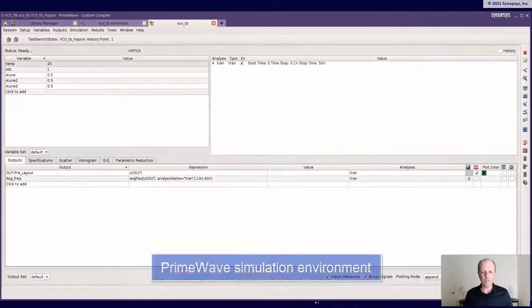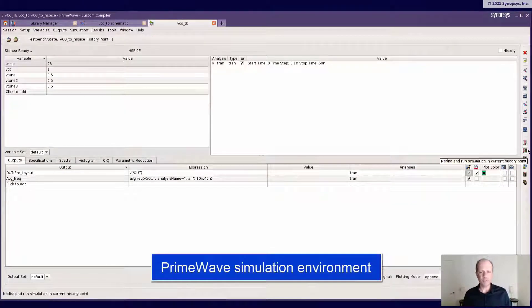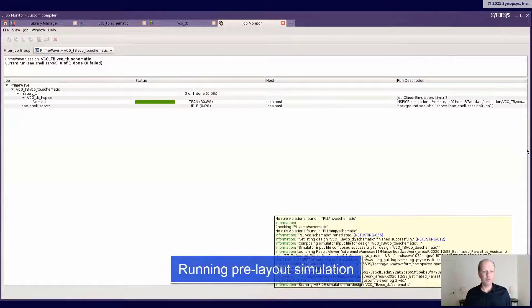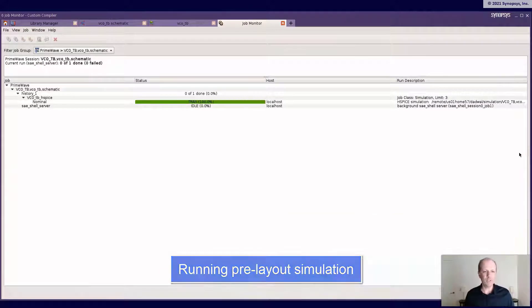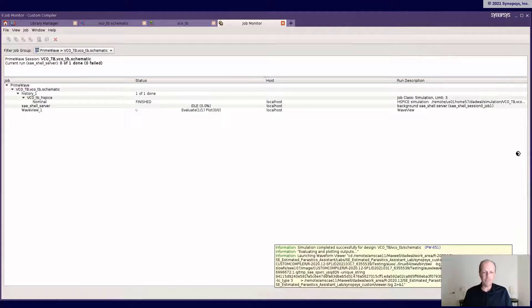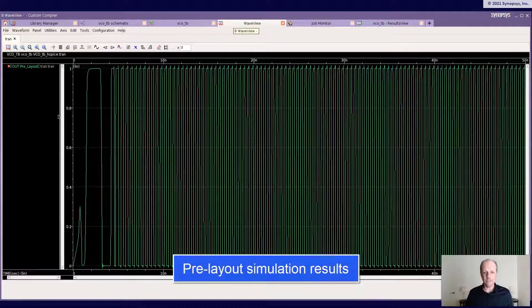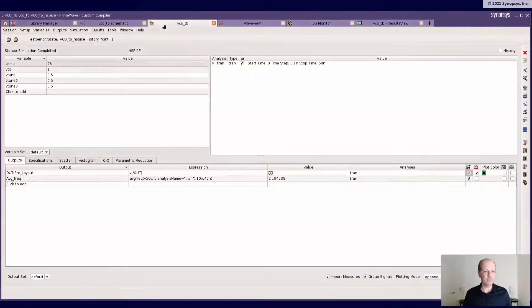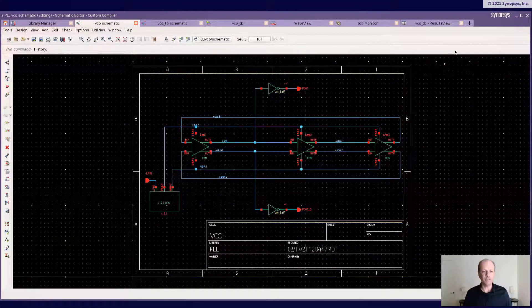We are using a VCO here, and we'll bring up the testbench into PrimeWave, perform the netlist and simulation. That's running the simulation on the schematic without estimates to start with, and you can see we calculate the frequency here, which is about 2.19 gigahertz.